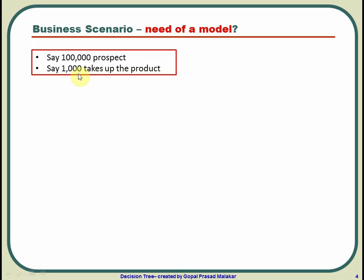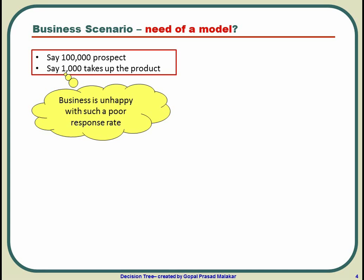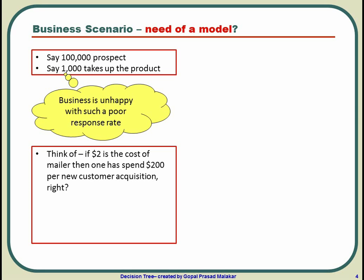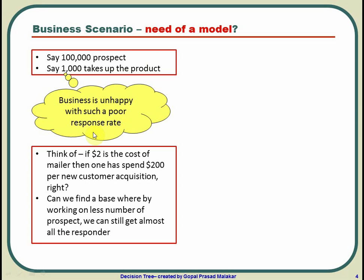So for each product sold, you have spent $200 just on mailers — that's $200,000 divided by 1,000. That's a very high cost. The business leadership is quite unhappy with this poor response rate and they call an analyst, asking if there's a way to work on fewer prospects and still get almost all the responders.